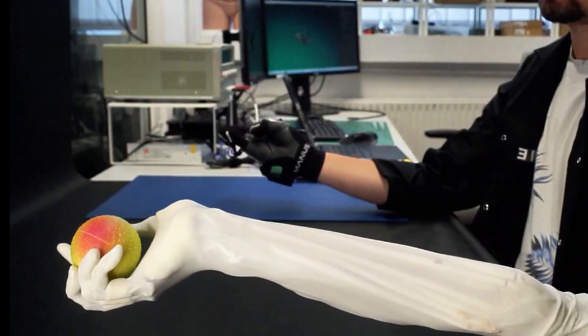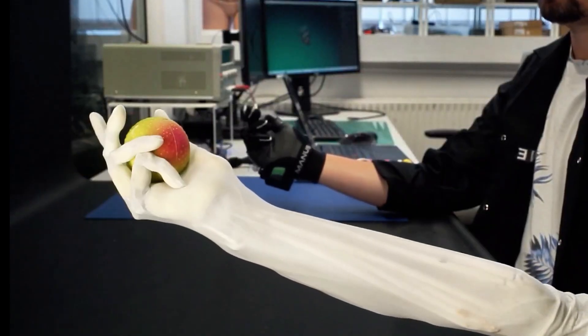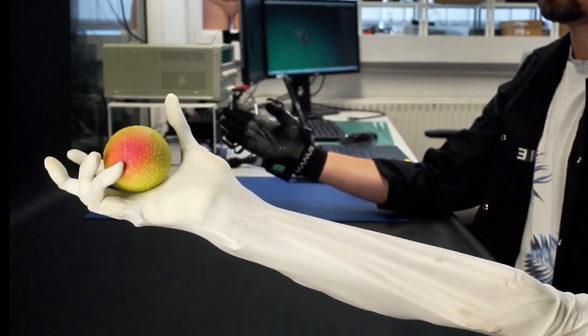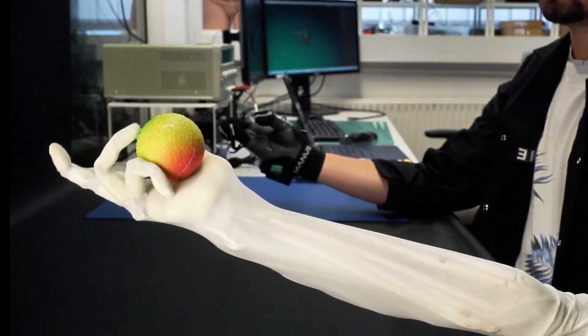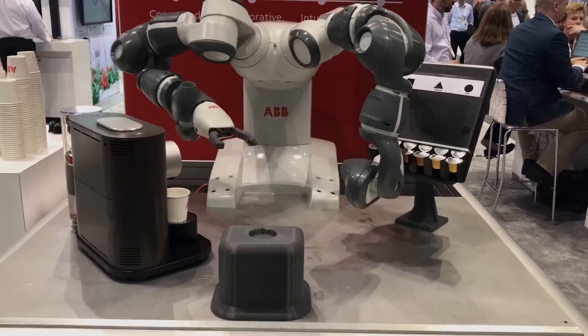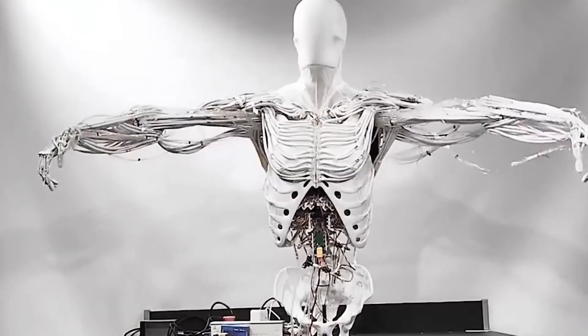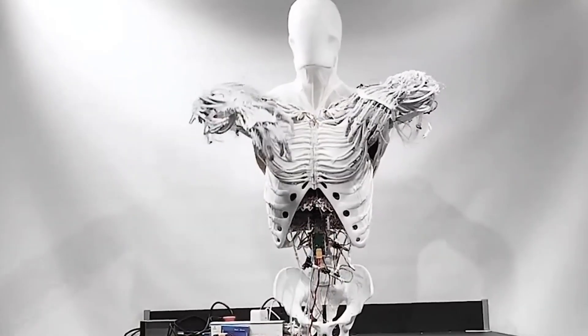What makes Clone Alpha stand out is its biomimetic design, which is a fancy way of saying it's built to imitate biological systems. Instead of using traditional motors and actuators, Clone Robotics has developed synthetic versions of human organ systems.